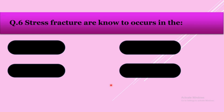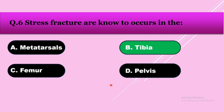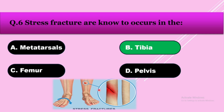Question number six: Stress fractures are known to occur in — option A: metatarsal, option B: tibia, option C: femur, option D: pelvis. The answer is tibia. In a stress fracture, some part of the bone segment remains intact.